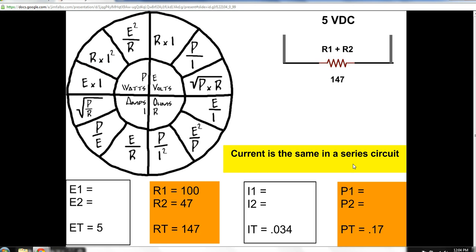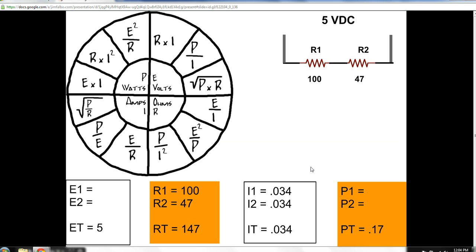Here's one of our rules. Current is the same in a series circuit. So, that means this .034 flows through both loads equally. And here are our two loads in our series circuit. Next, we'd like to solve for the voltage drops. We want to know how much voltage this load used and how much did this one use out of our supply voltage.